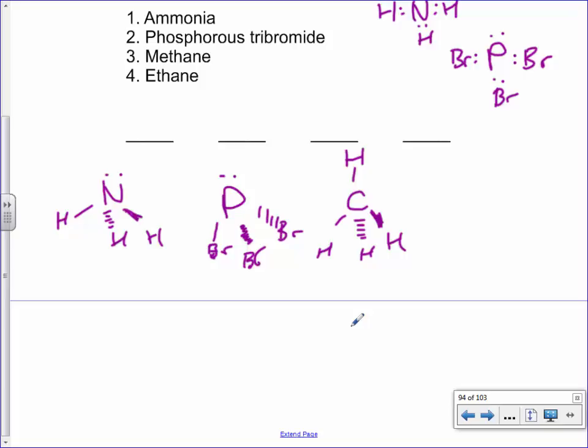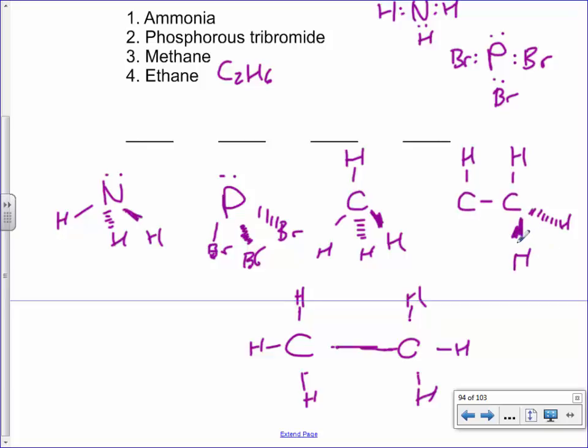Alright, last one's a bit trickier. Ethane. First question, does anybody know ethane's molecular formula? Thank you. Ethane is C2H6, which makes it a bit trickier to draw. If I were to draw this carbon here and this carbon here, it probably makes a lot of sense to bond them together. And then there's six leftover bonds. So, one, two, three, four, five, six there. That's kind of what C2H6 looks like.